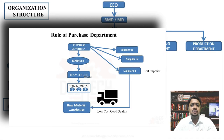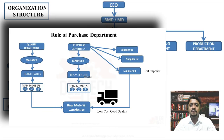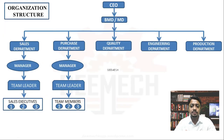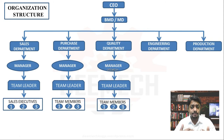This is how raw materials get into the raw material warehouse. At the same time, the quality department checks the quality and quantity of the new raw materials. Once approved, it will be communicated to the engineering and production departments. The quality department has a manager, team leader, and quality team members.